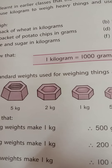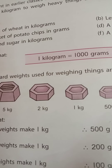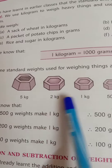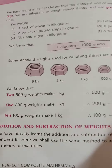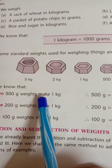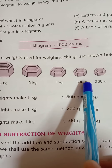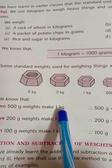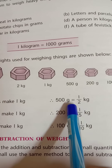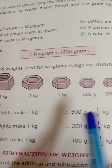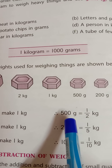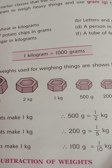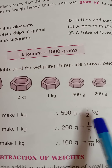These weighing blocks were normally used for weighing. Nowadays, they use digital weighing scales, but in earlier times, they used these weighing blocks to weigh things. Two 500-gram weights make 1 kg — if we take 2 blocks of 500 grams together, they weigh equal to 1 kg. So 500 grams is half of 1 kg.